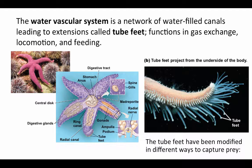The water vascular system is a network of water-filled canals forming a ring around the central disc where the mouth and digestive system are located, with radial canals extending into each arm. Muscularized sacs of fluid called ampullae connect to the tube feet — when the ampullae constrict, they force water into the tube feet in a hydraulic system, allowing the animal to extend, retract, and stick them to surfaces to pull itself around. The water vascular system functions in gas exchange, locomotion, and feeding.